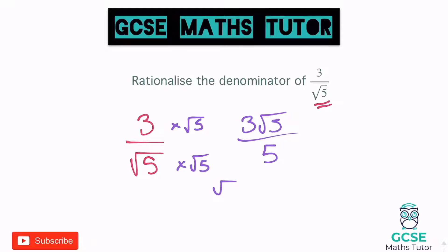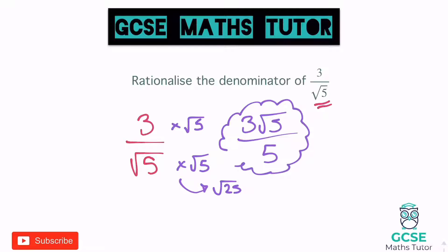Root twenty-five is just five. Root five times root five is root twenty-five, which gives us five. So that is our final answer there. We've rationalised the denominator — it's no longer a surd on the bottom, it's the whole number five.